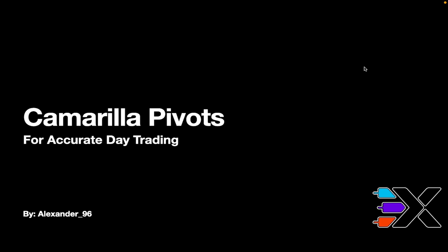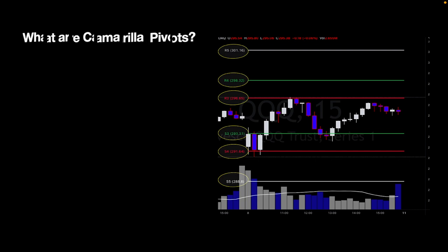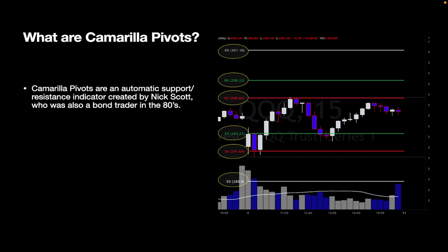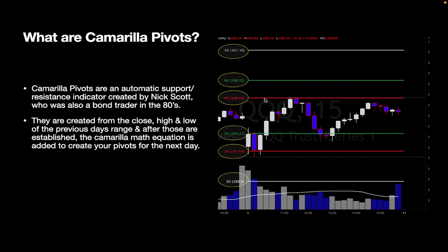First, let's get into what Camarilla pivots are. Camarilla pivots are an automatic support and resistance indicator created by Nick Scott, who was a bond trader in the 80s and had his own firm. He came up with this equation, and some people even speculate online that this indicator was actually reverse engineered because he never released the formula or the math equation. It's kind of proprietary software traded in his own firm.